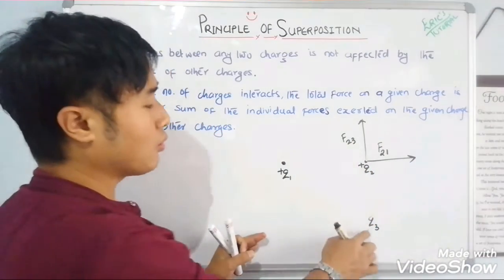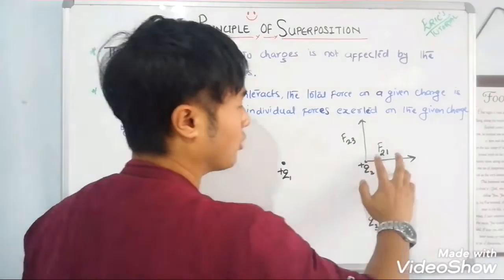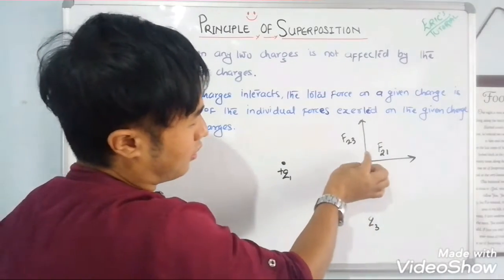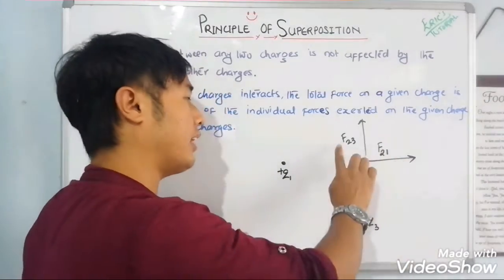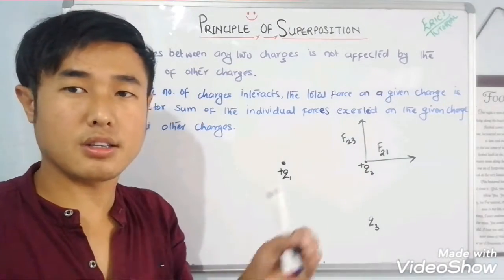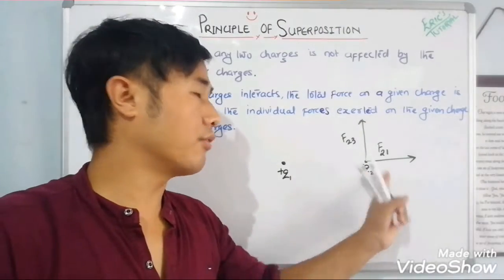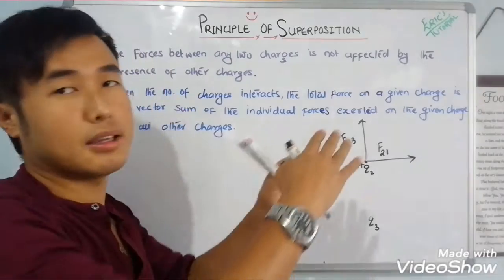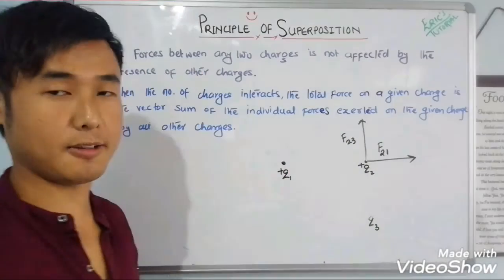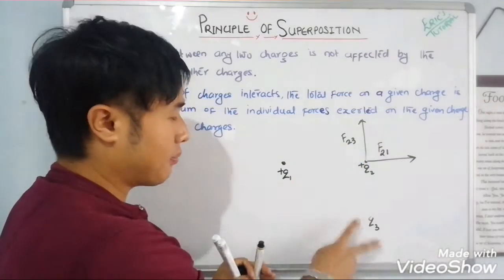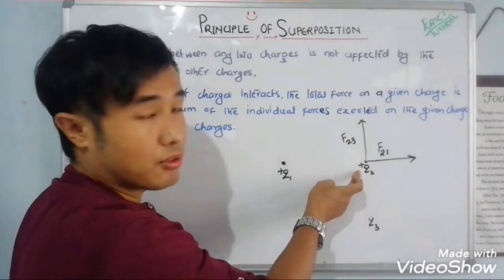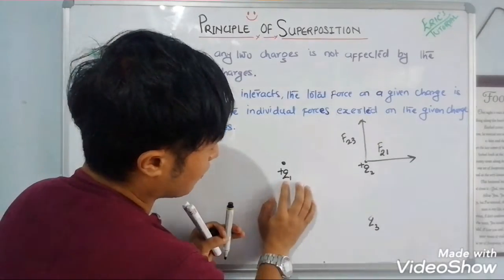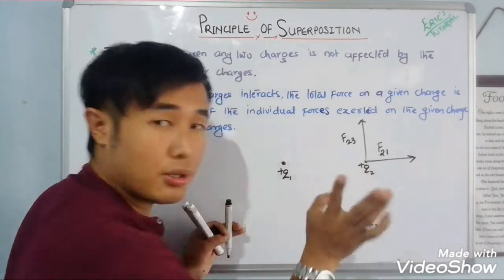In the first case, q1 was exerting force F21 on q2. In the second case, q3 is exerting force F23 on q2. The introduction of q3 does not change F21 — F21 remains the same. Similarly, F23 is not affected by F21. Even if we introduce more charges, the individual forces remain exactly the same — the presence of any other charge does not affect the individual forces. However, the net force on q2 does change, because now we add up all the individual forces.